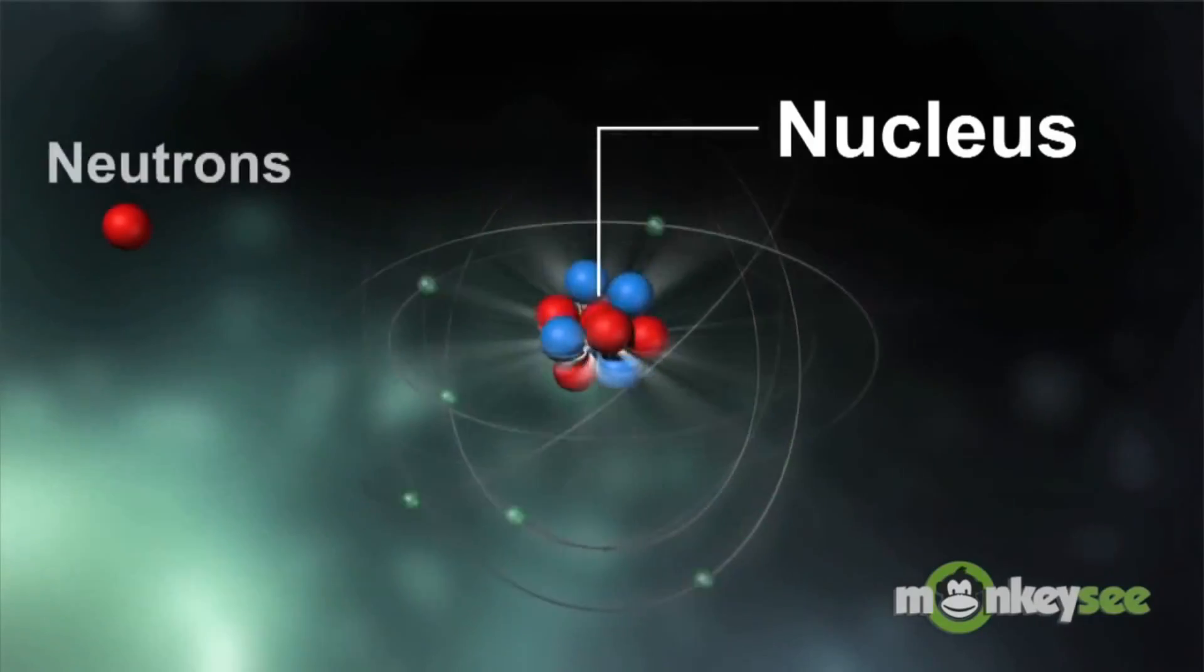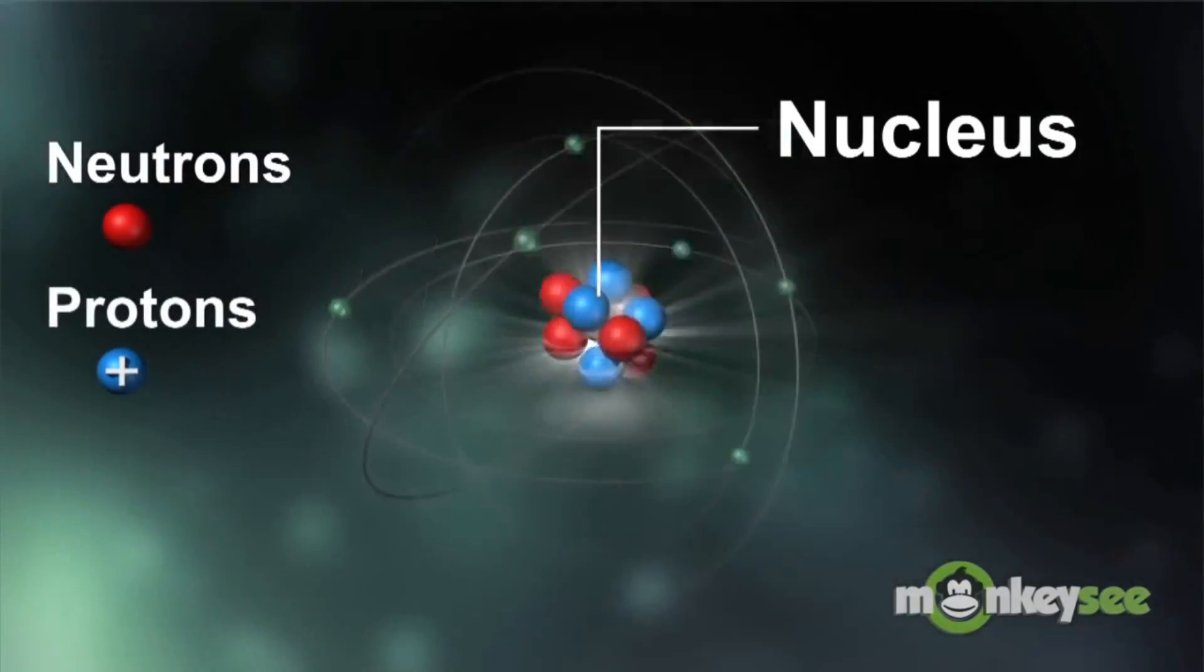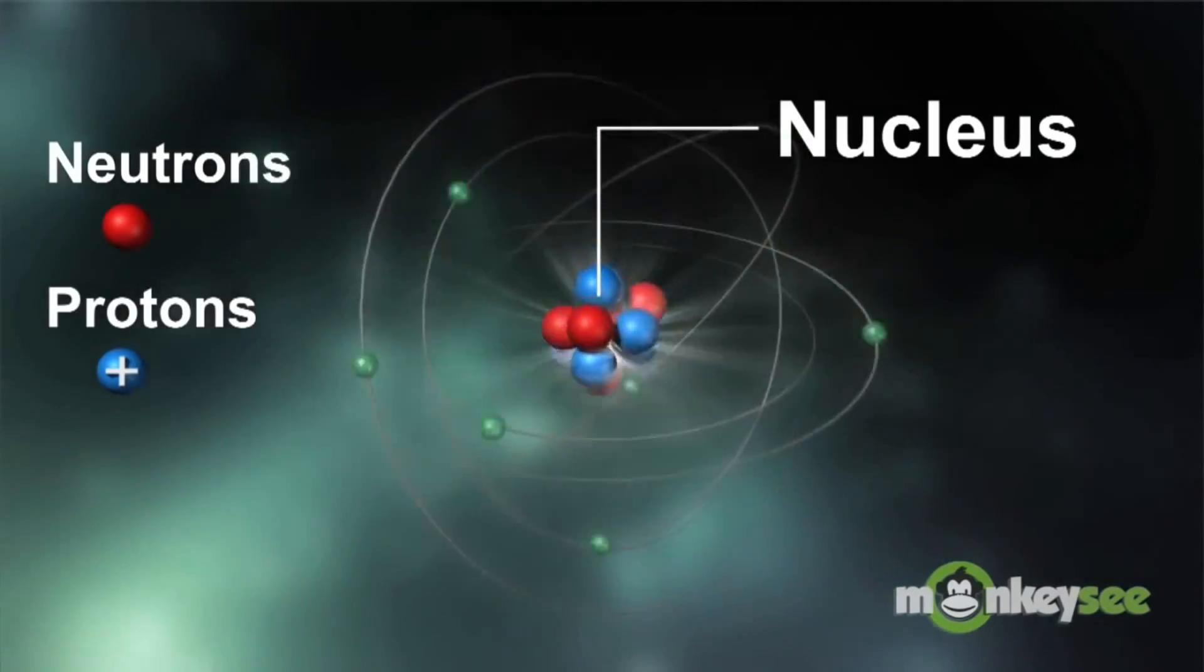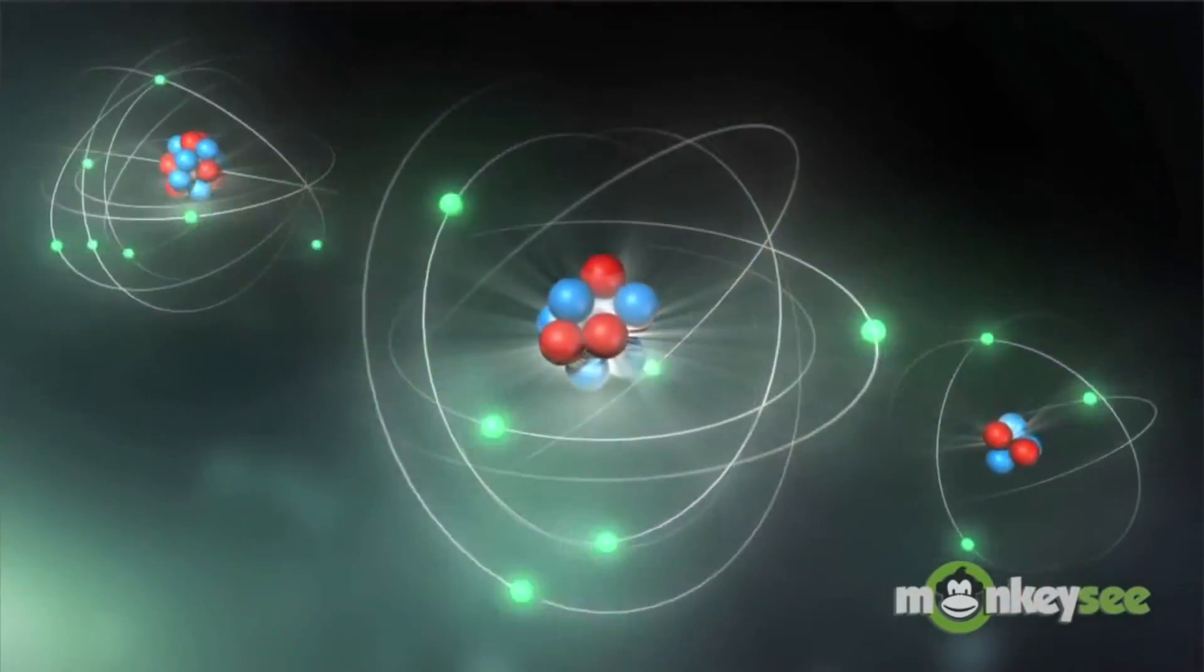An atom is made up of three tiny kinds of particles called subatomic particles. These are protons, which have a positive charge, electrons, which have a negative charge, and neutrons, which have a neutral charge.